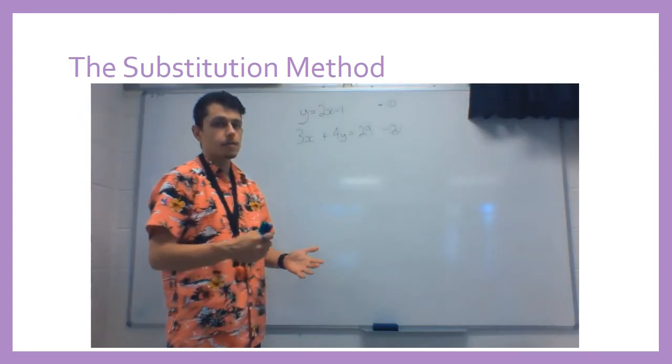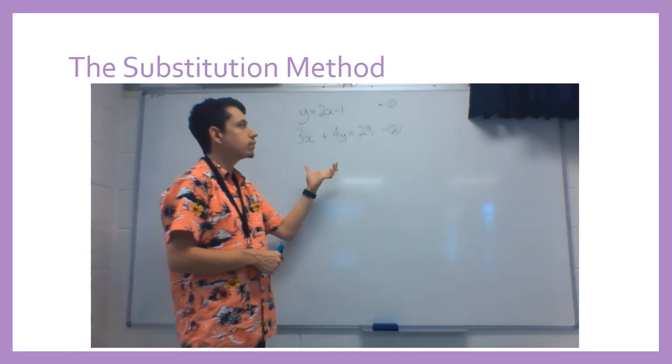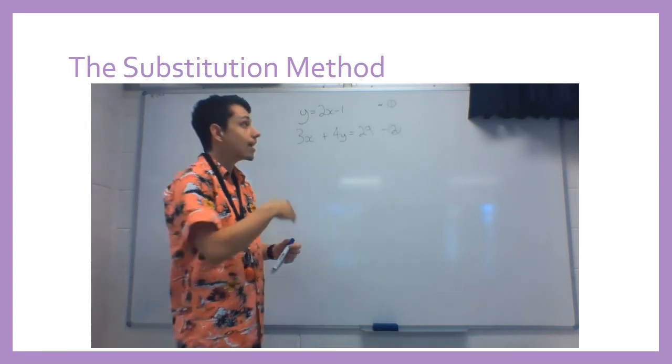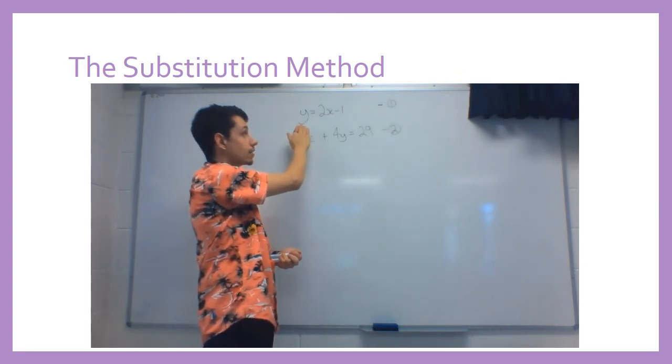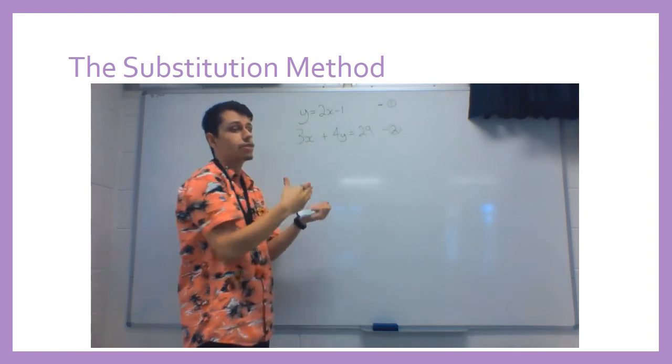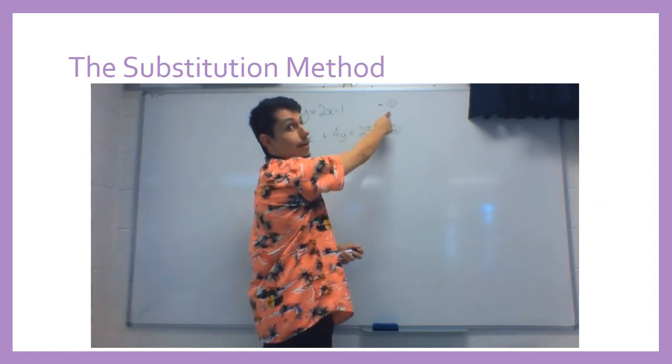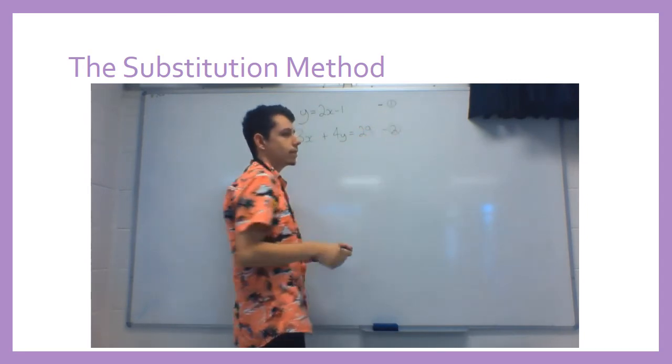Okay, so we're going to use the substitution method to solve this set of equations. In this instance, we have one with a single variable at the front, so that's going to make this a lot easier. But the first thing I need to do is label my equations. This is equation 1, this is equation 2.